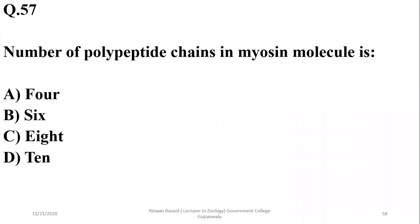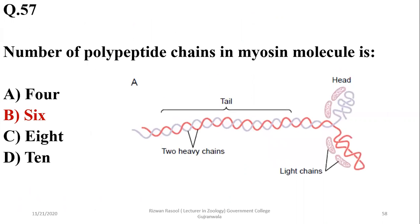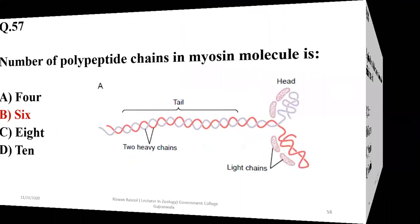The number of polypeptide chains in one molecule of myosin is actually six — there are two heavy chains and four light chains which are found in the globular head. So B is the right option.